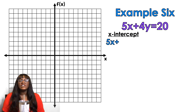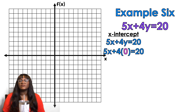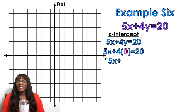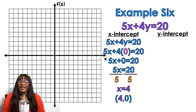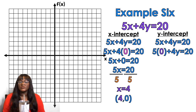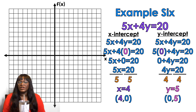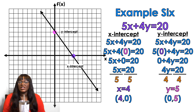Last example: for the x-intercept, plug in 0 for y — x equals 4 — so the x-intercept is (4, 0). For the y-intercept, plug in 0 for x — 4y equals 20 — divide by 4 — y equals 5 — so the y-intercept is (0, 5). Plot your points — ta-da, you're done! You did it, I'm proud of you.